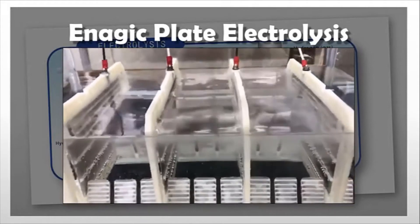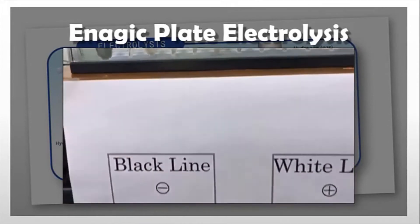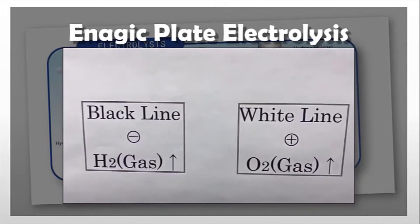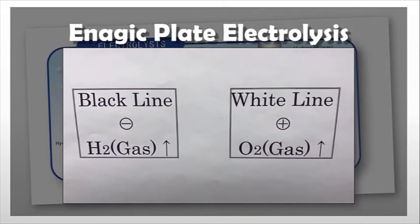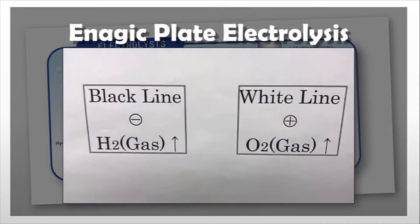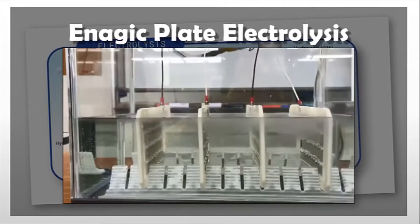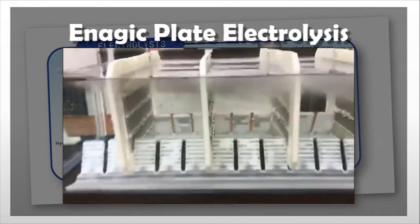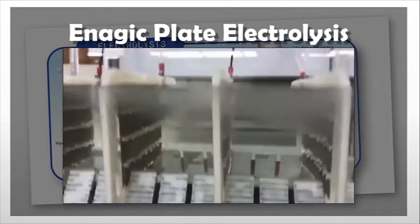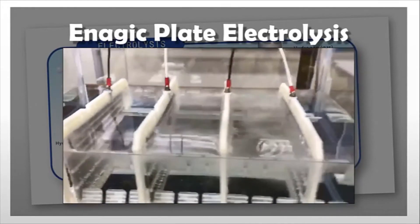You could see the actual bubbles coming off, gas being created. The black line is H2 gas, the white line is the oxygen gas. As we see it again, you could see it's just amazing hydrogen being produced. Hopefully this taught you a little bit, and I say use this video. Have an awesome day.